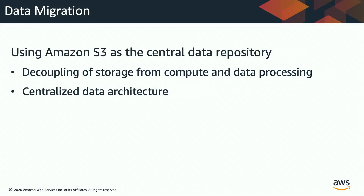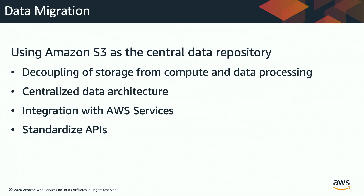Vice versa, you can scale your compute layer independently. Another benefit of using Amazon S3 for data storage is you can have a centralized data architecture — one single source of truth where you have all your data. Once your data is in Amazon S3, you can use all integrated AWS services to consume the same data. You can still run Hadoop on Amazon EMR, but use other services without moving the data. You can also standardize your APIs, because you don't have to implement different APIs for different storage systems.